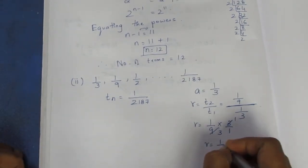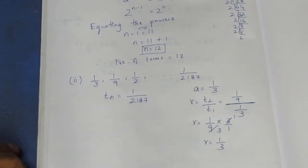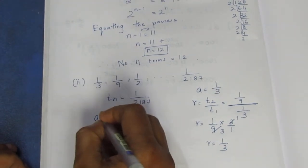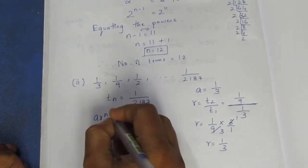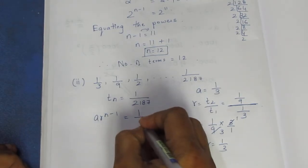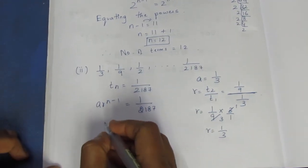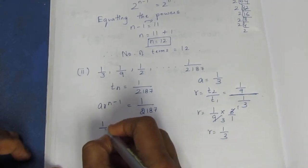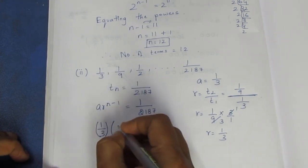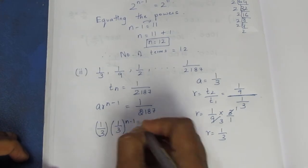R equals 1/3, meaning numerator is 1 and denominator is 3. Now the Tn formula: a times R to the power n minus 1 equals 1/2187. A equals 1/3, R equals 1/3, so (1/3) times (1/3) to the power n minus 1 equals 1/2187.